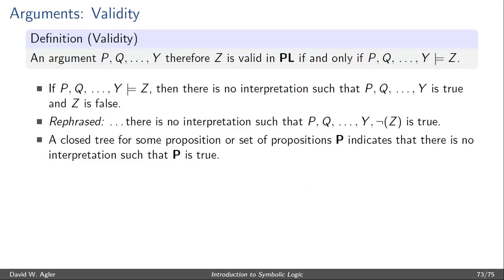To see how to make use of the truth tree test in order to determine whether or not an argument is valid or invalid, consider that a closed tree for a proposition or set of propositions, let's call it P, indicates that there is no interpretation such that P is true.